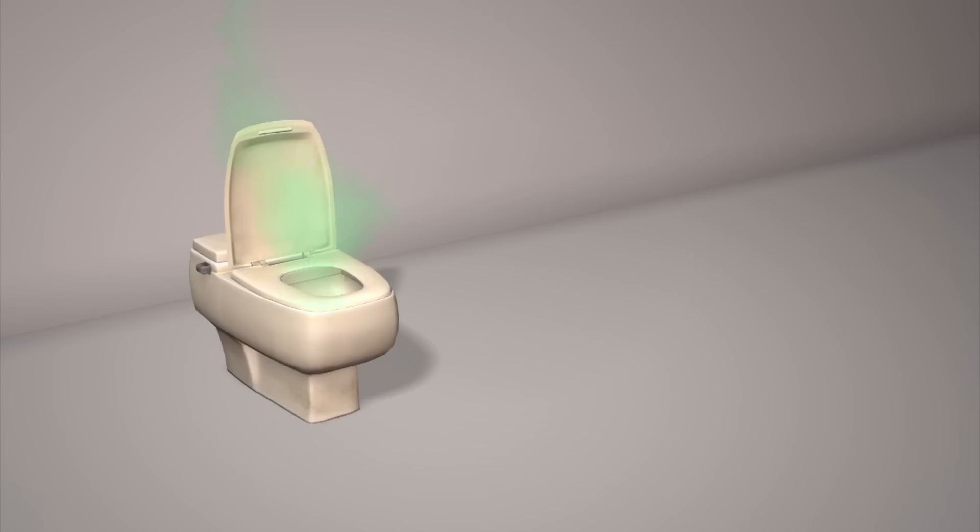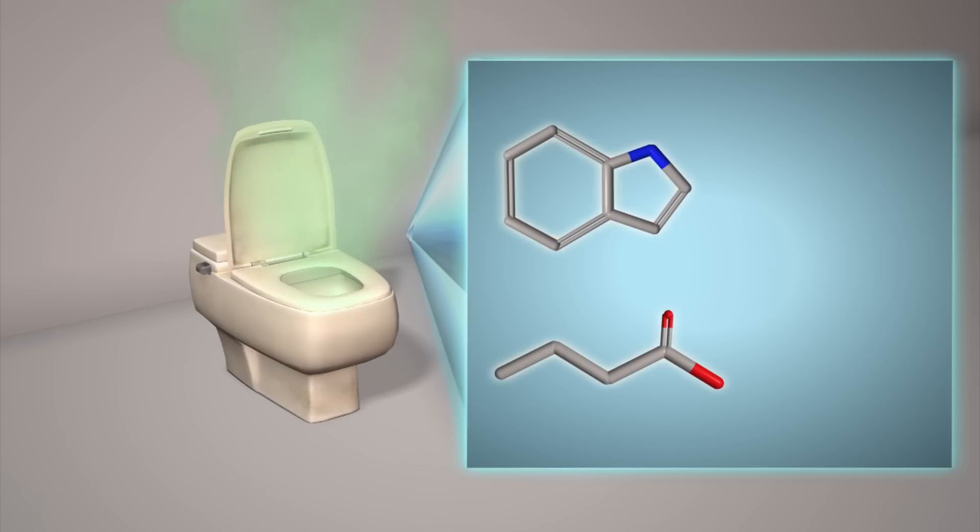Scientists discovered that bad toilet odors are primarily made up of four chemical compounds: indole, butyric acid, p-cresol, and dimethyltrisulfide.